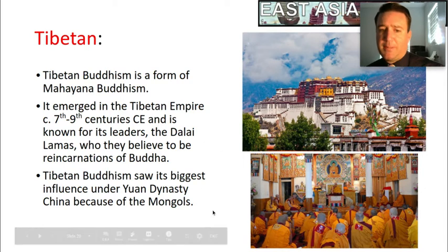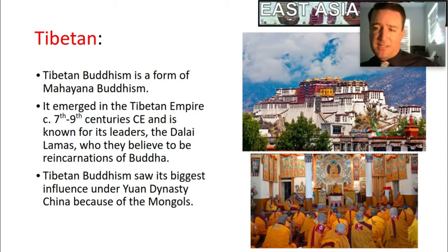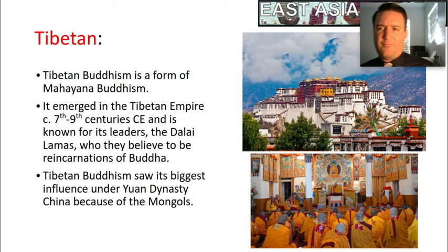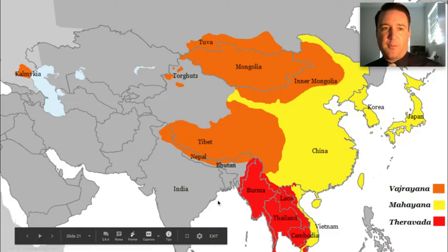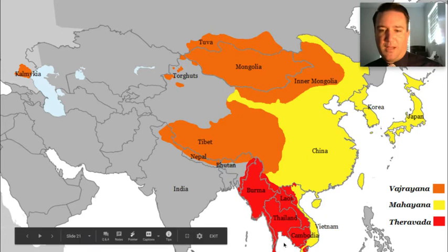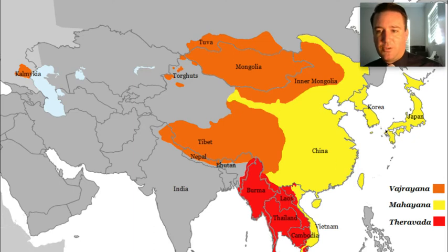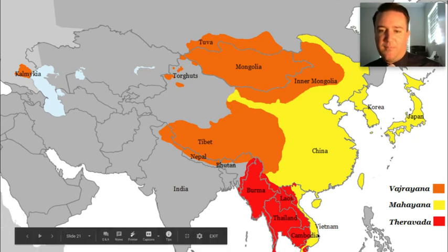The Dalai Lama is believed in this branch to be the reincarnation of the Buddha, and they have an interesting system for determining who the true Dalai Lama is. Tibetan Buddhism saw its biggest influence during the Yuan dynasty when the Mongols — who were very religiously tolerant despite other things associated with them — took control of Tibet and promoted trade, spreading these ideas. On the map, Tibetan Buddhism is orange, Theravada is red, and Mahayana is yellow — covering China, Korea, Japan, and Vietnam, reflecting significant Chinese influence.